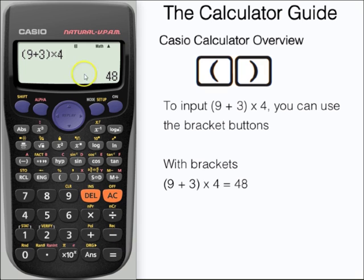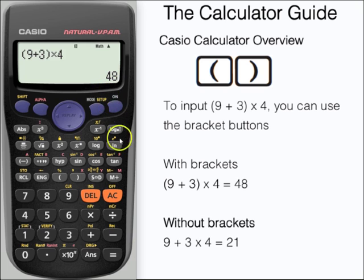Brackets are useful because it's calculated the nine plus three before we then multiply by four. Had we not used the brackets we would have a different answer of twenty-four.